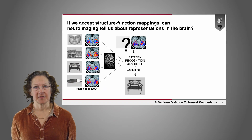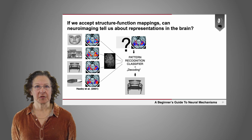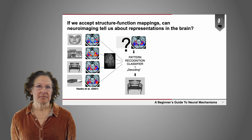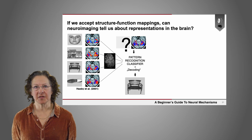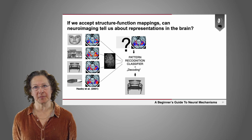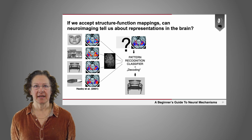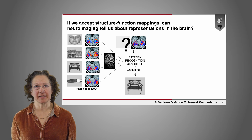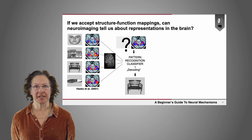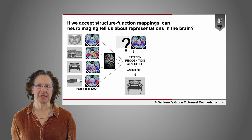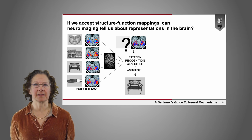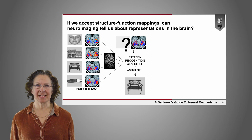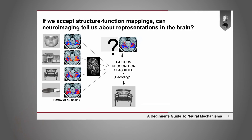For instance, if you look at a face, your brain shows one pattern of activity. If you look at a house, other areas of the brain are activated in a different pattern. Chairs and shoes show the same thing. Each class of objects has a distinguishable pattern of activity — a kind of fingerprint. Using pattern recognition with classifiers or machine learning, you can decode from brain activity to figure out what object is likely being viewed.